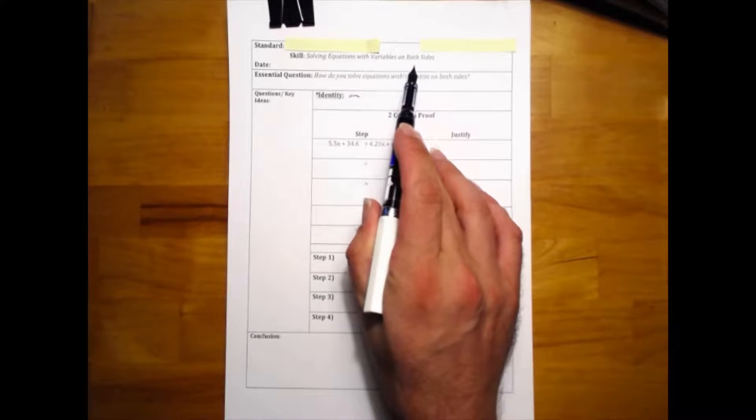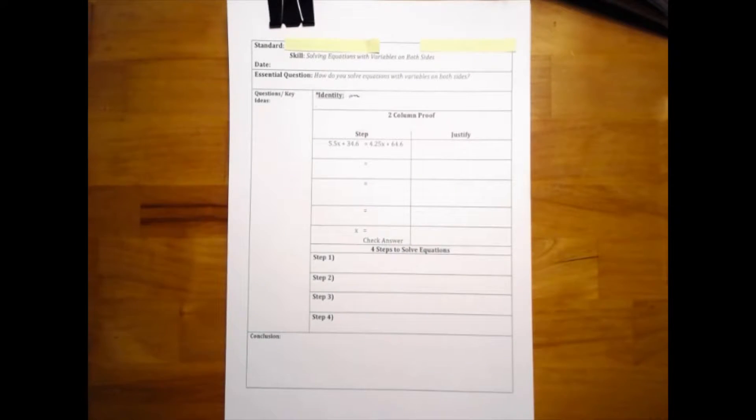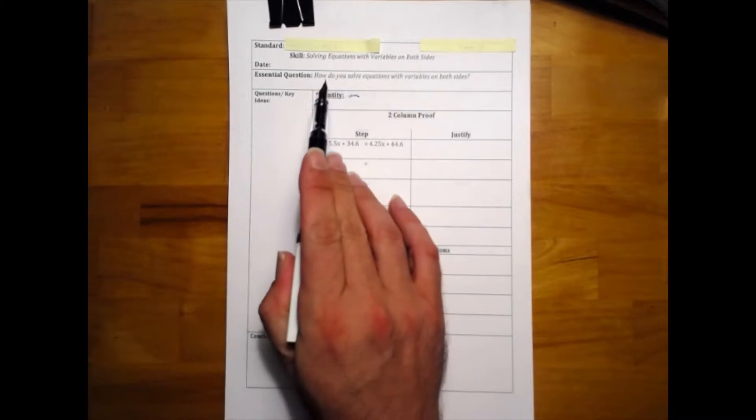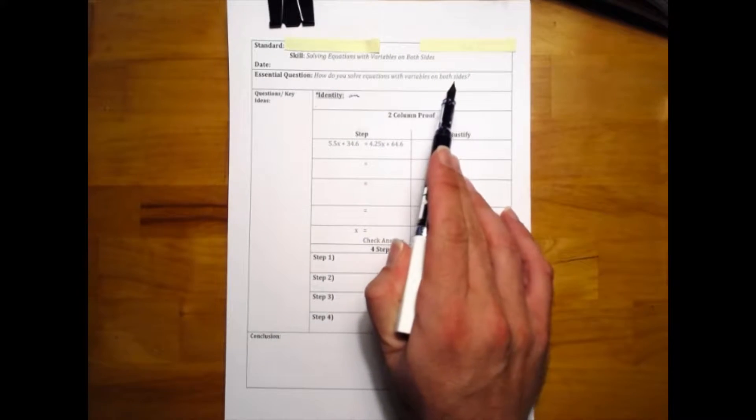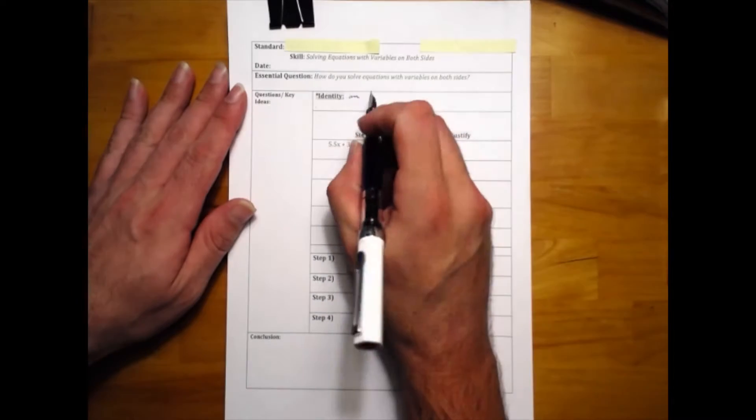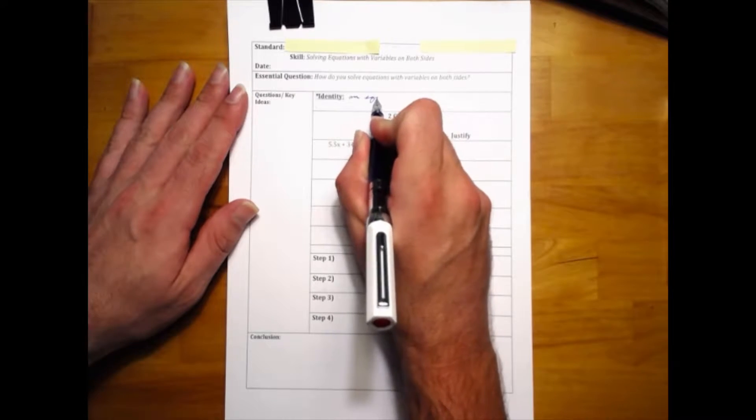This lesson is on solving equations with variables on both sides. The central question is: how do you solve equations with variables on both sides? To do this, we need to know what an identity is. An